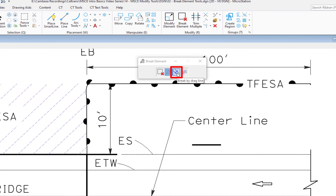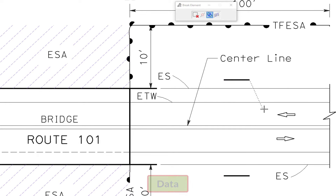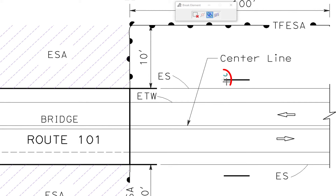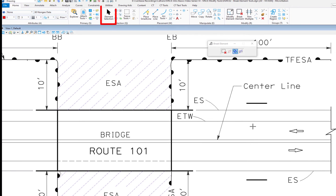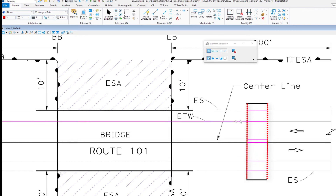The next one is break by drag line. Between this line's endpoints and the line down here, we need to cut right along these two paths. I move my cursor to the endpoint, do a data — now it looks like I'm drawing a line, but this is a cut line. I go to the other end and do a data, and you can see all of these elements are cut right along that intersection. I do the same thing on the other side. Then going to element selection, you can see those elements are broken out — cut right along those two lines — which is great if you need to delete them or change their attributes.